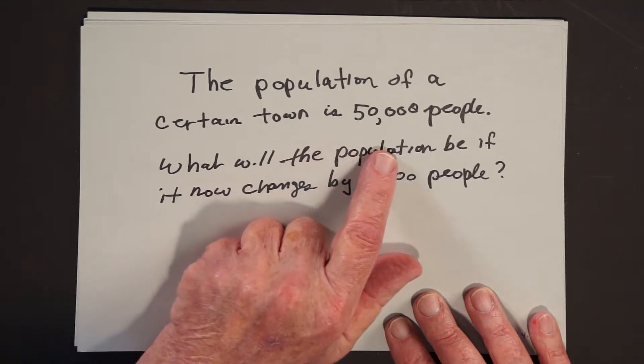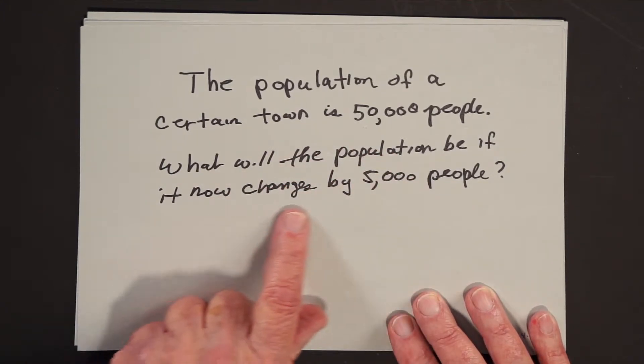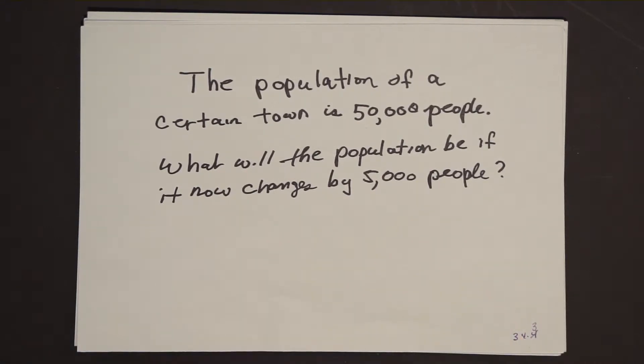In terms of our adjective-noun theme, there's a very natural way to introduce sign numbers. The population of a certain town is 50,000 people. What will the population be if it now changes by 5,000 people? The missing piece of information is whether the 5,000 person change was an increase or a decrease. We've already introduced rational numbers and motivated them physically by talking about rate of change. And that's where sign numbers would come in if we were developing the course in the form of a seamless transition.